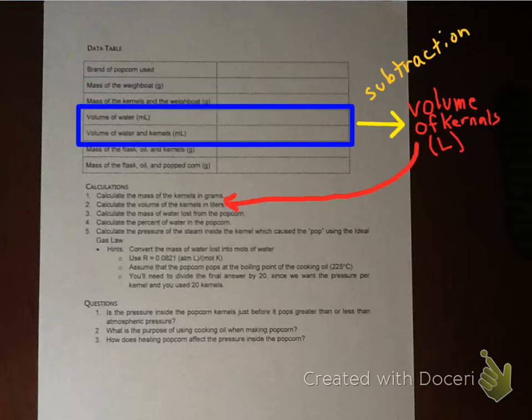So the next calculation that we need to get from our data is the actual volume of the kernels. And so if you look, we have the volume of the water in milliliters and then we added the kernels and got a new volume. So for instance, we might have been around 5.0 milliliters. We added the 20 kernels and the water displacement maybe put it up to 8.6. And so you subtract 8.6 from your starting 5.0. So then you would get 3.6 milliliters.